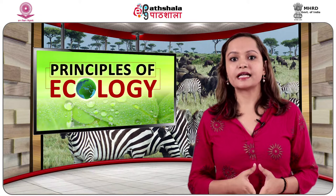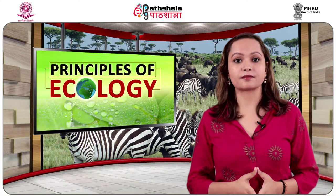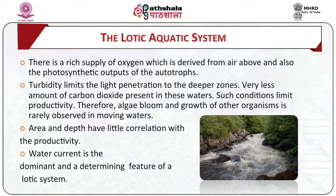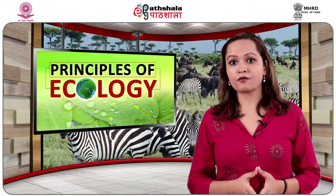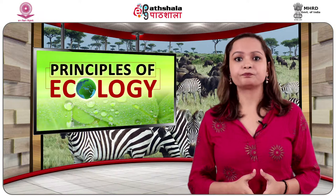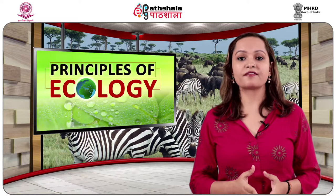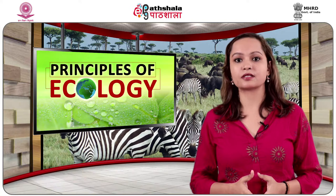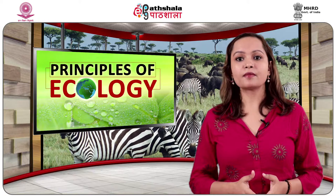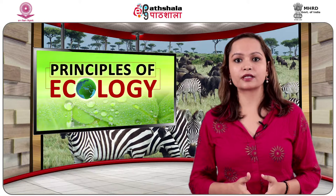The environment of a lotic aquatic system is relatively unstable compared to lentic systems. There is a rich supply of oxygen derived from air above and from the photosynthetic output of autotrophs; oxygen is evenly distributed across the water body and oxygen depletion is very rare in unpolluted lotic bodies. Turbidity limits light penetration to the deeper zones. Very little carbon dioxide is present in these waters — such conditions limit productivity, therefore algal blooms and growth of other organisms are rarely observed in moving waters. Area and depth have little correlation with productivity. Water current is the dominant and determining feature of lotic systems. Organisms having effective mechanisms to anchor in the water current are generally observed in these ecosystems. Productivity is inversely proportional to current velocity. Living organisms disseminate their spores, seeds, eggs and sperms through the water current along the length and breadth of the channel.